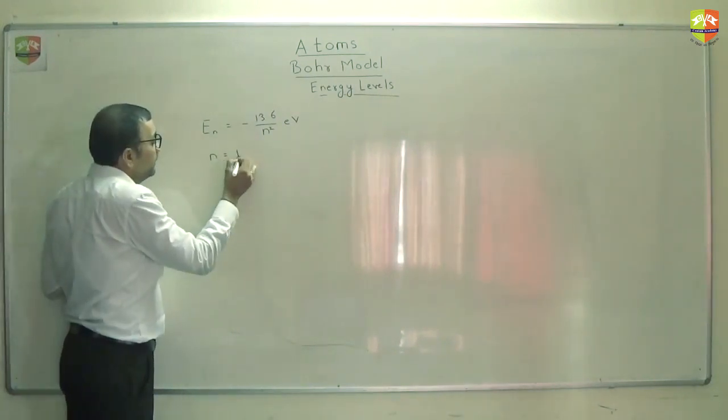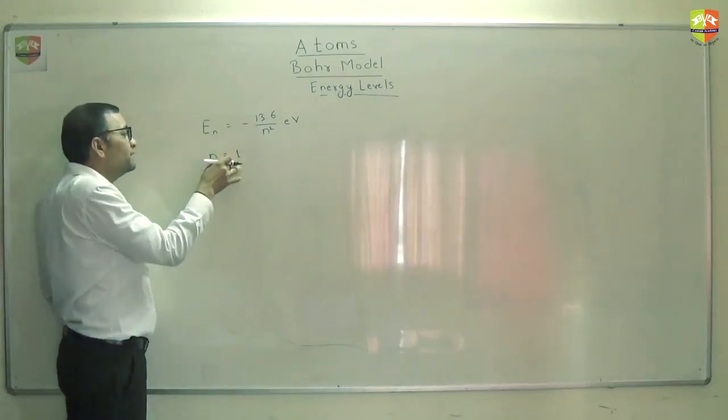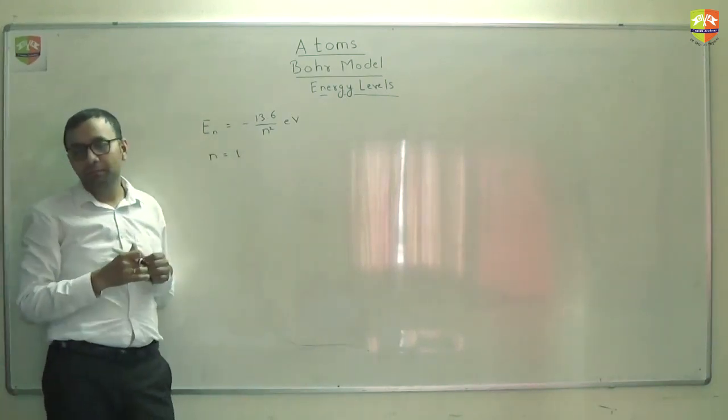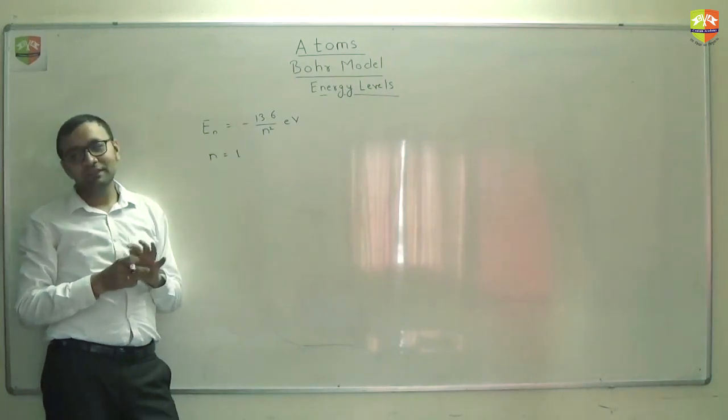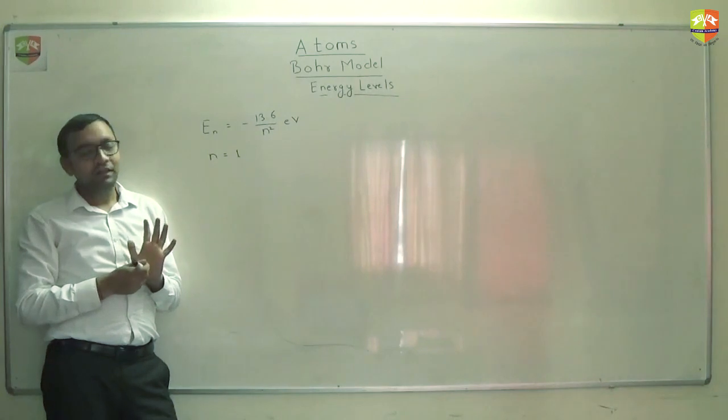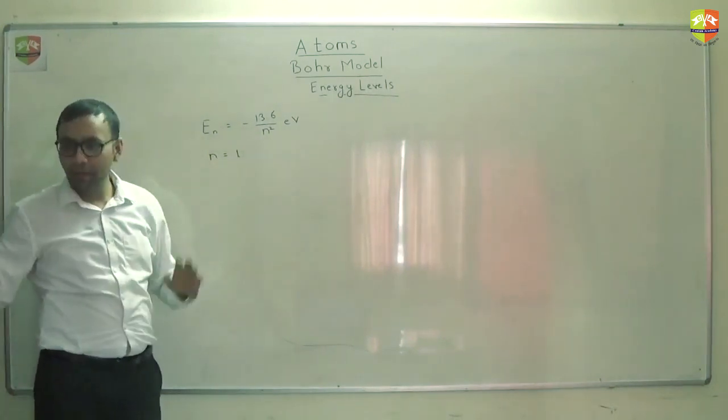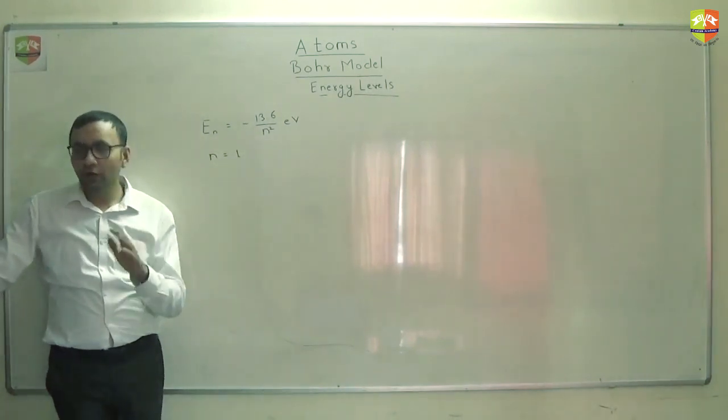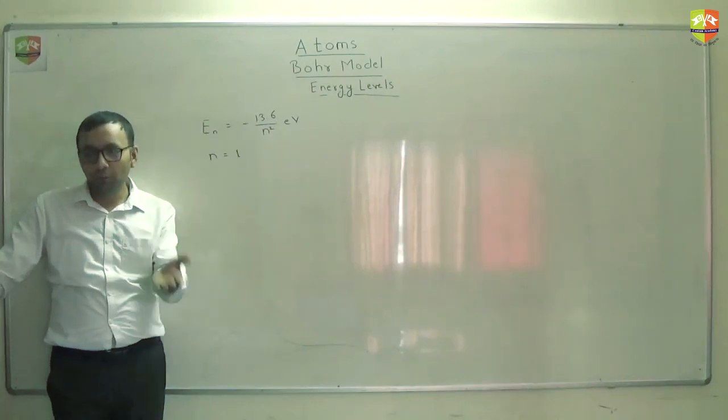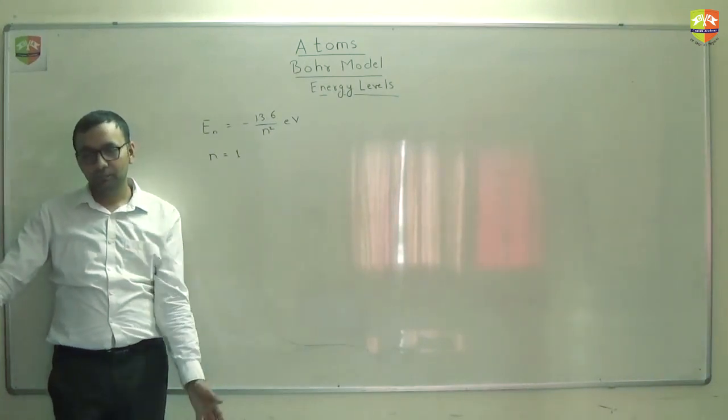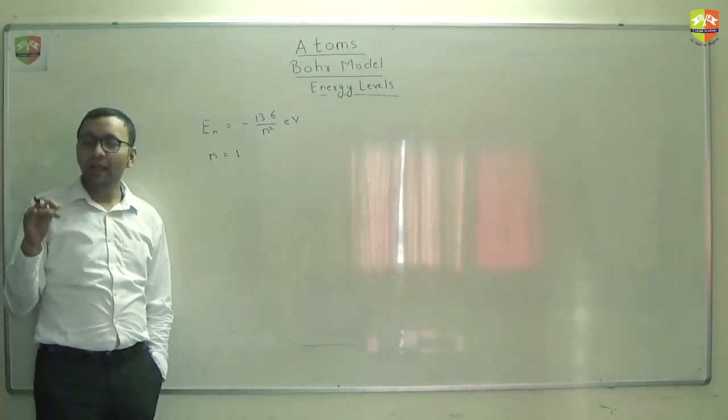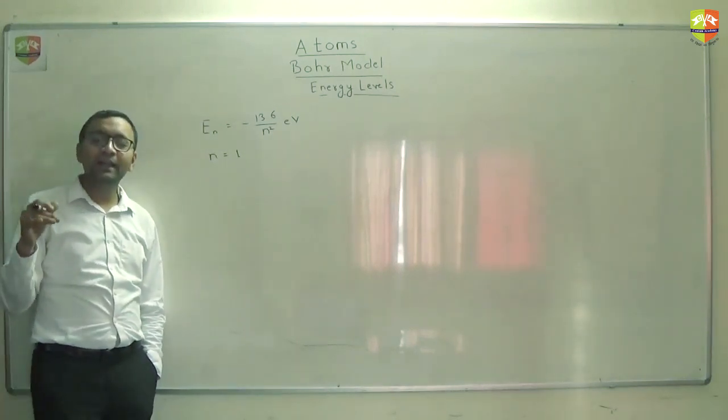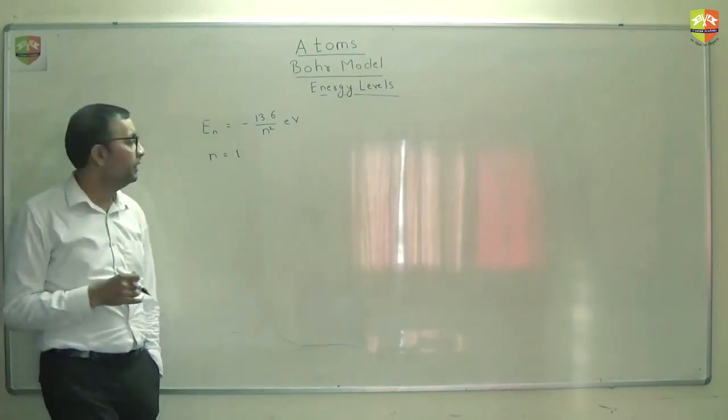This is the least n. For the least n, energy will be minimum. There is a negative sign. Every time you forget negative sign. It is minimum. For n equal to 1, it is minimum. So n equal to 1 is also called ground state. You can't go below that. So least possible energy happens when n equal to 1 or when electron in its ground state.